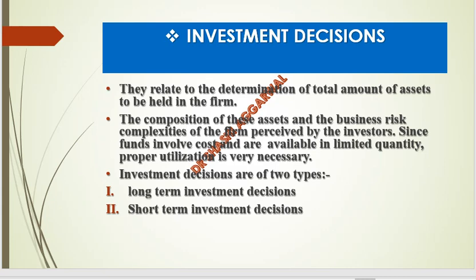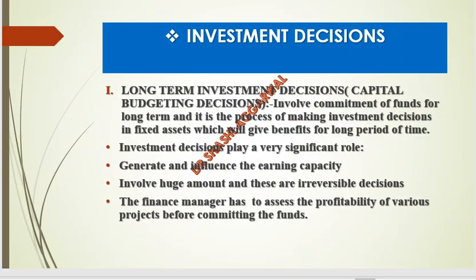Short-term investment decisions are working capital decisions, which relate to the firm's day-to-day expenses. Long-term investment decisions are also called capital budgeting decisions, where funds go into fixed assets on a long-term basis. We have the fixed asset for many years, so the investment decision is very significant — how we allocate money into these assets.